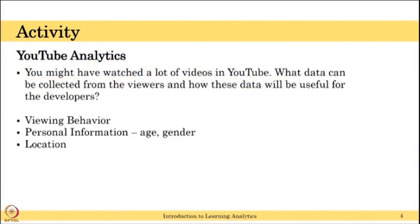Three main types of data are collected. One is viewing behavior — how many views a video has. The second is personal information: when you register or sign into Google, you provide your age, gender, location, and other details, all of which are recorded. Also, location information is captured from the IP address, telling you from which country your YouTube viewers are from and how much reach your content has.